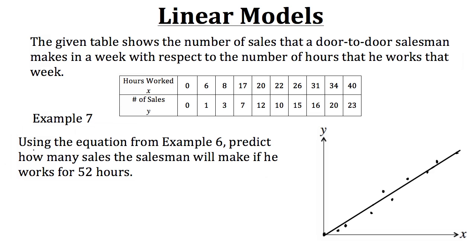So this linear equation here would model our particular set of data. Now let's use that equation we had from example 6 and predict how many sales the salesman will make if he worked for 52 hours. So again, our equation was y equals 0.58x. And we want to find out how many sales he'll make if he worked for 52 hours. Well, 52 hours would be an input or an x value. So if we plug that in for our x, we could find out our output, which would be the number of sales he'd make. So we have y equals 0.58 times our x value, which is 52. And then when we simplify that or evaluate it, we get a y value of roughly 30.